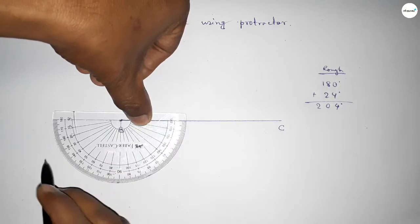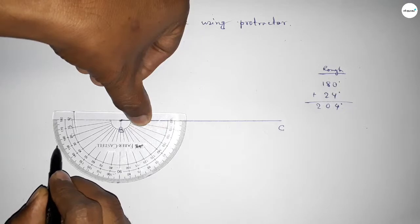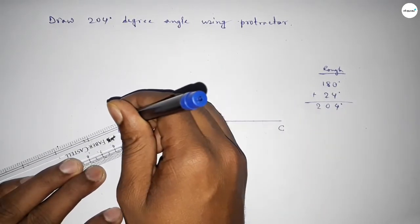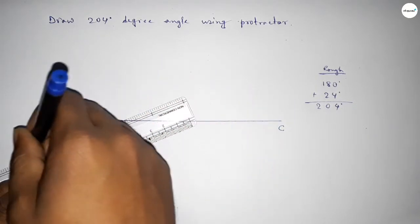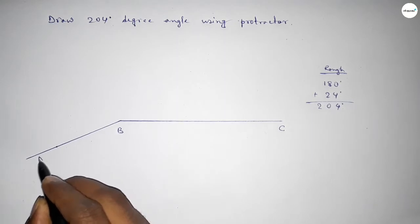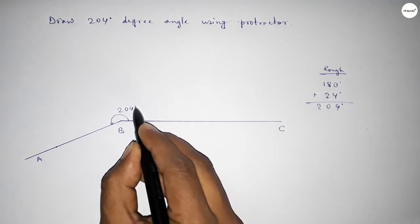So by adding 24 degree angle with 180 degree, then we can get 204 degree. Now joining this side and taking here point A, so angle ABC up to this is 204 degree angle.